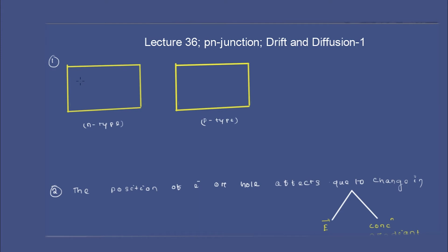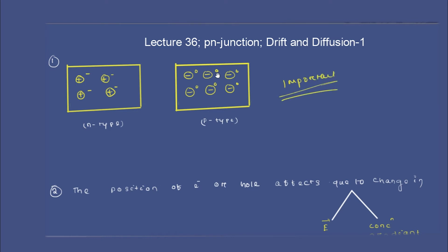As we have discussed in our doping class, n-type means positive ions with free electrons, and p-type means negative ions with holes. This is very important — if you don't have clarity on this, you're not going to understand anything. I want you to watch the linked video on why n-type is represented as positive ions with free electrons and p-type is represented as negative ions with holes.